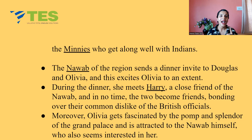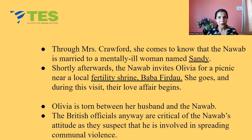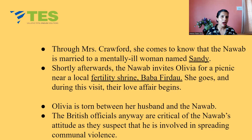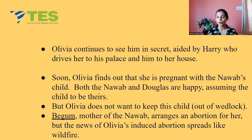Olivia gets fascinated by the Nawab, who has invited Olivia and her husband Douglas for dinner. Through Mrs. Crawford, she comes to know that the Nawab is already married to a mentally ill woman named Sandy. Shortly afterwards, the Nawab invites Olivia for a picnic near a local fertility shrine called Baba Firdaus. She goes, and during their visit their love affair begins. Olivia is torn between her husband Douglas and the Nawab. The British officials are critical of the Nawab, suspecting him of spreading communal violence. Olivia continues to see him in secret, aided by their friend Harry, who drives Olivia to the Nawab's palace and the Nawab to Olivia's house.